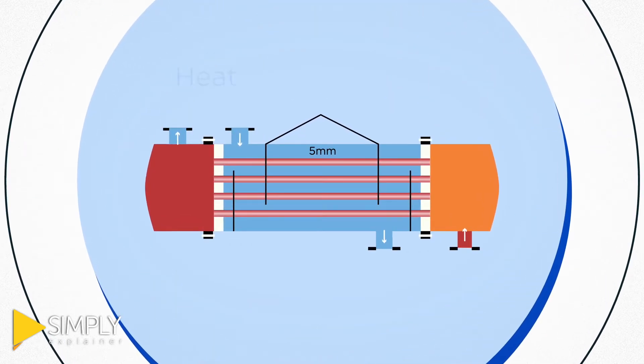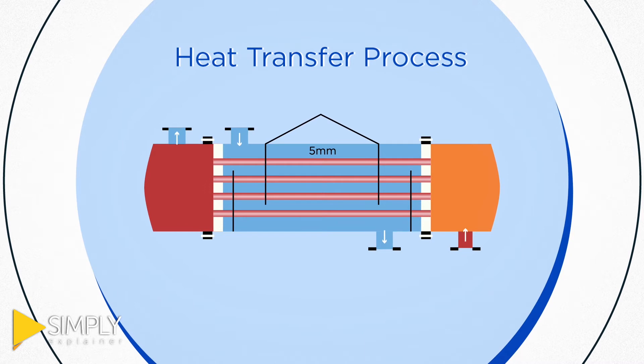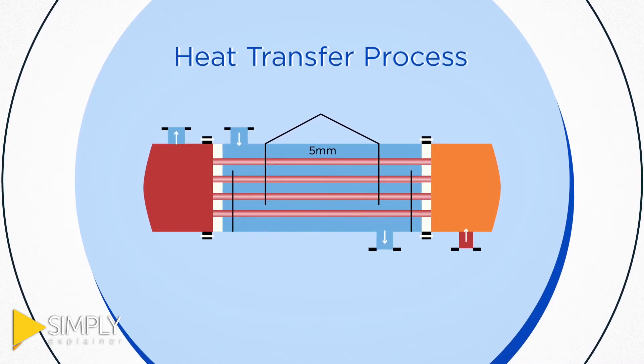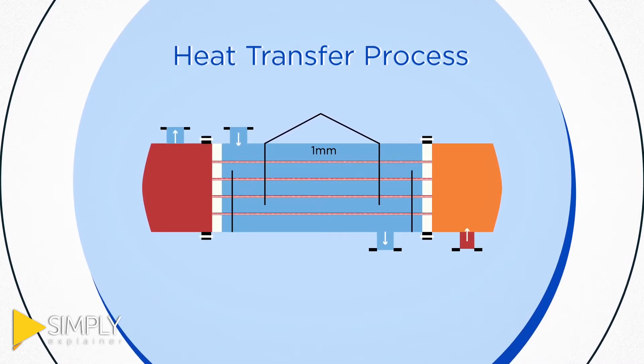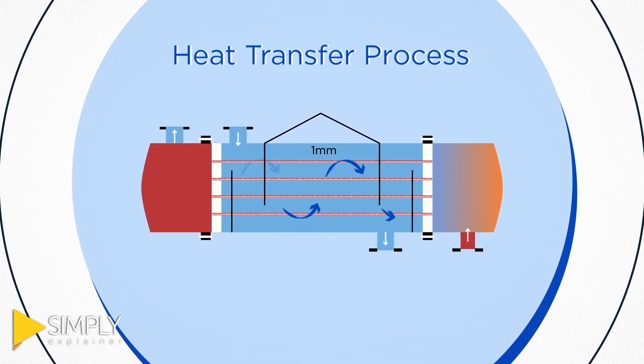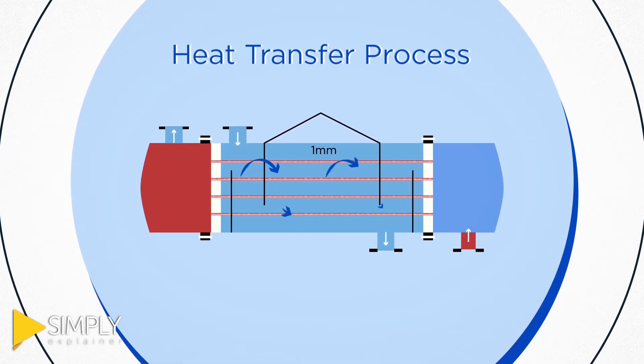Then, we radically disrupt the heat transfer process by reducing the diameter of conventional refrigerant tubes from 5 millimeters to 1 millimeter. Also, by flattening the tubes, we allow for the direct flow of air to more efficiently lower temperatures.